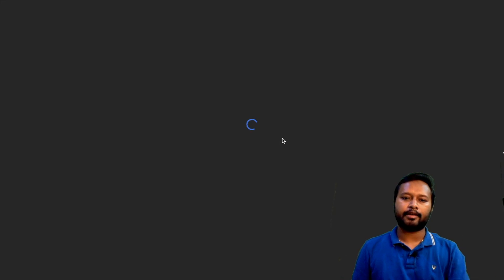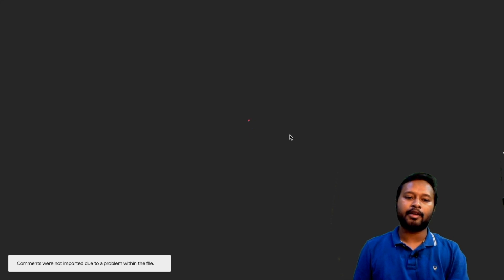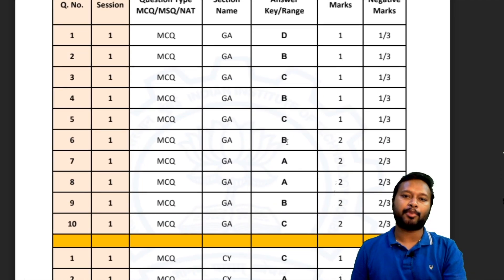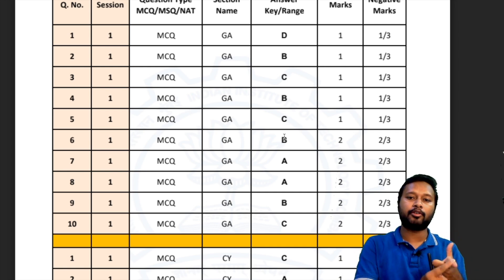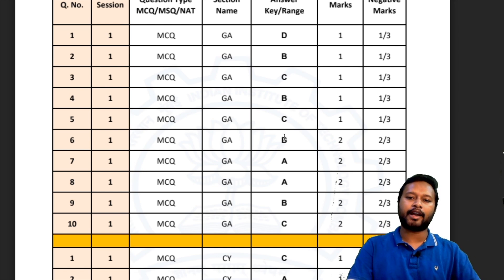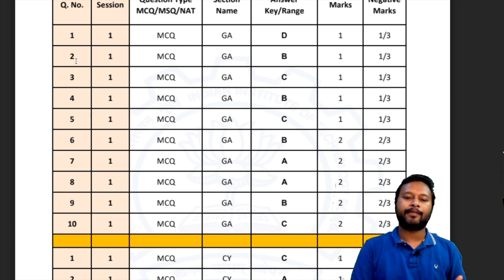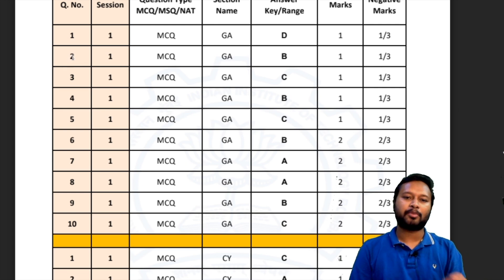The answer key is available here — just click 'View' in front of Chemistry. You can download it and check. To make this clear: the question numbers are according to the final question paper available on the website right now. Download both the final question paper and the answer key from the website and match accordingly. Don't look at your response sheet and match question number two to answer B directly — it is not necessary that question number two in your response sheet is the same question in the official paper.